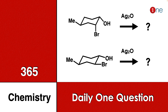Welcome to One Chemistry. This is the 365 Chemistry series — one question daily. Here you have cyclohexane, bromine, and alcohol. The two reactions differ only in the bromine position: the first has bromine at axial, the second has bromine at equatorial. We are reacting with silver oxide, and you have to find whether stereochemistry can play any role.